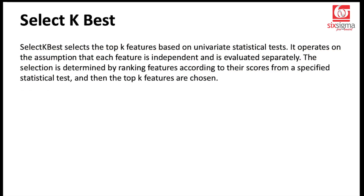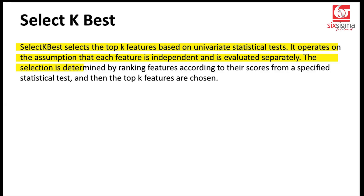Let's move to the next approach: select k-best. Select k-best selects the top k features based on univariate statistical tests. It operates on the assumption that each feature is independent and is evaluated separately. The selection is determined by ranking the features according to their scores from a specified statistical test, and then the top k features are chosen.